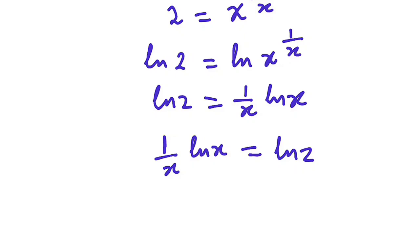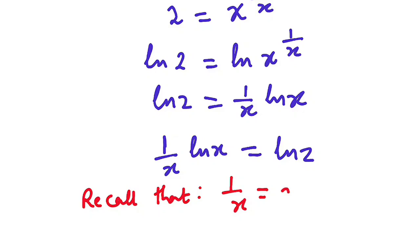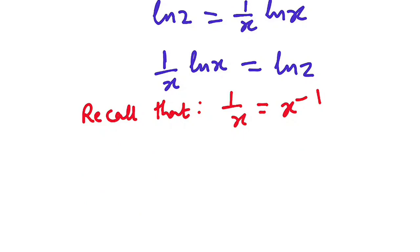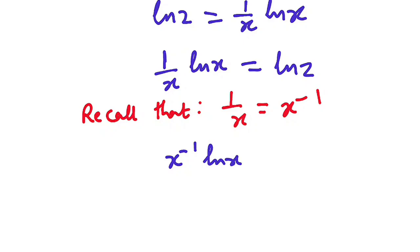From there, the next thing I'm going to do is recall that 1 over x can be written as x to the power of minus 1, from the laws of indices. So this 1 over x will be written as x to the power of minus 1. So I have x to the power minus 1 times ln of x equals ln of 2.